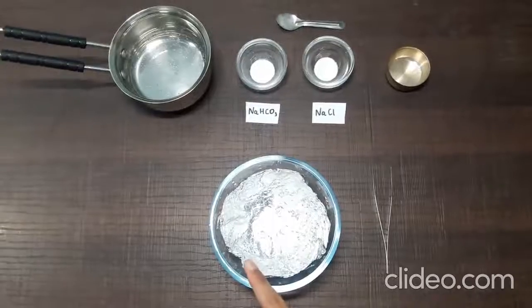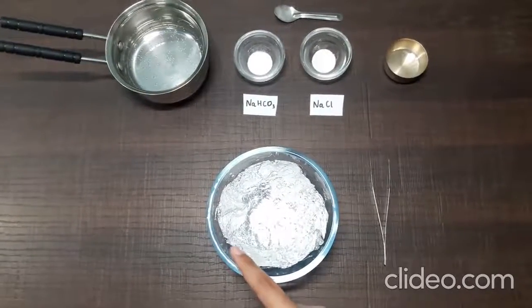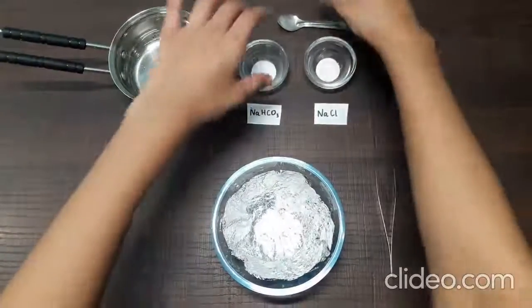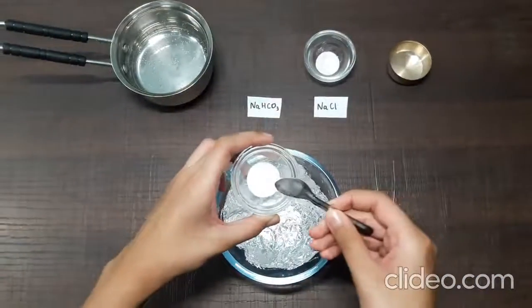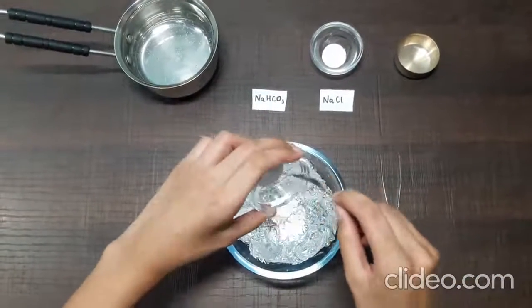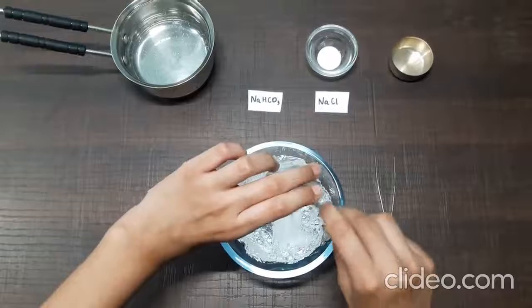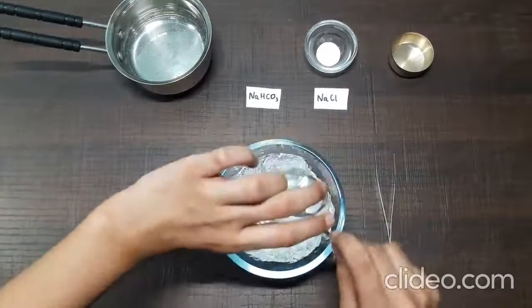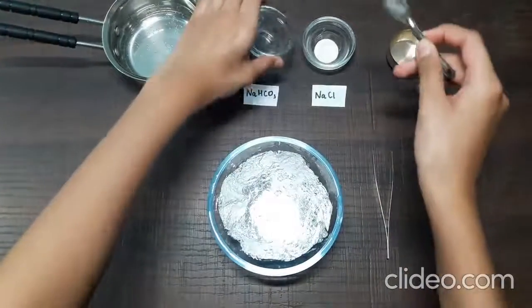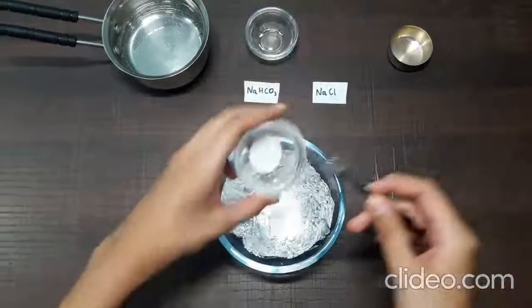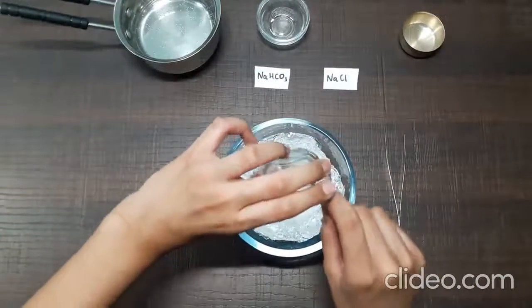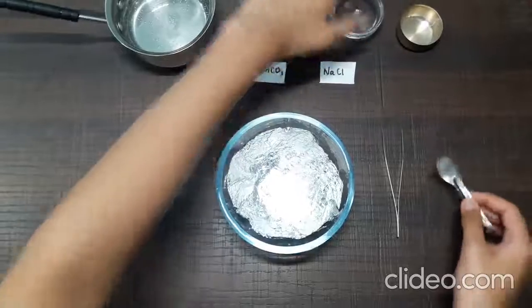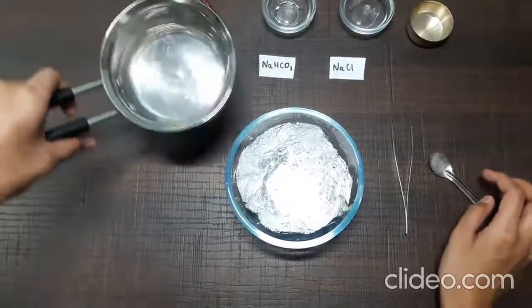Step 1: Line the bowl with aluminum foil, which I have already done here. Step 2: Put some sodium bicarbonate or baking soda into the bowl. Next, add the salt followed by hot water.